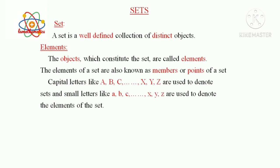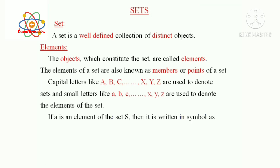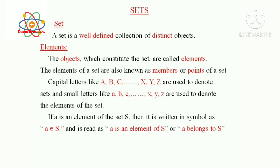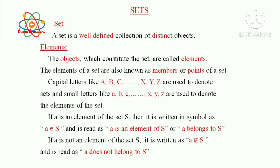Sets are represented by capital letters and elements in the set are represented by small letters. If A is an element of the set capital S, then it is written in symbol as A ∈ S, and is read as 'A is an element of S' or 'A belongs to S'. If A is not an element of the set capital S, it is written as A ∉ S, and read as 'A does not belong to S'.